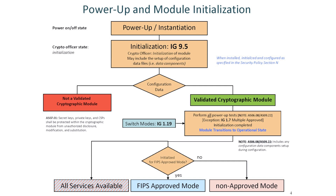We can basically divide would-be crypto modules into two categories from the very beginning. The first example is a module which does not meet the initialization requirements of IG 9.5 and may not perform the required power-up self-test after instantiation. This example is referred to as not a validated crypto module, because it doesn't follow the requirements of FIPS 140-2 from the get-go. Since it doesn't meet those requirements, we must discount it and move on to a model that can be made compliant.